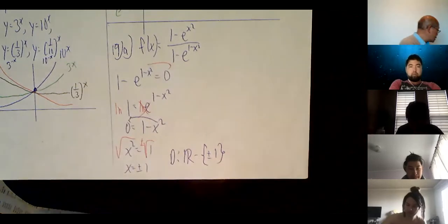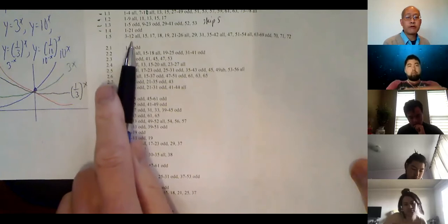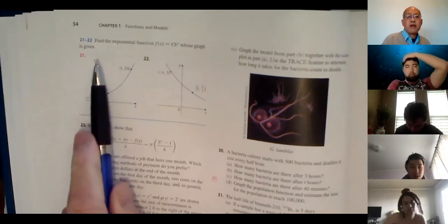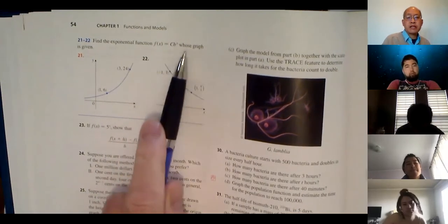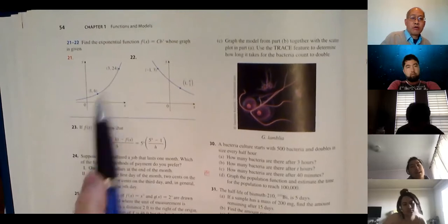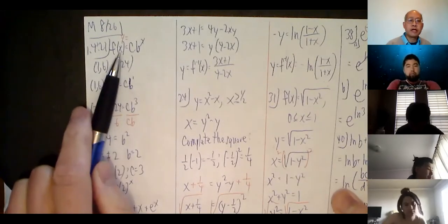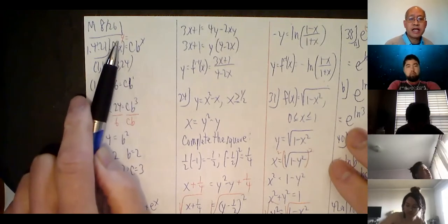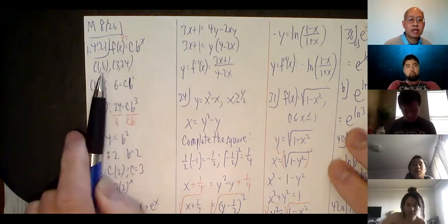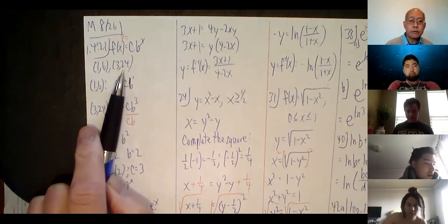The only other problem I wanted to show you was 21. So 21 looks like this: Find the exponential function f of x equals C times b to the x whose graph is given. It's exponential. The given points are (1, 6) and (3, 24). So the essentials you need are f of x equals C times b to the x. I sneak in y equals whenever it says f of x — that's the same as y. So f of x equals blah blah blah is the same as y equals blah blah blah. And you give me these two points: (1, 6) and (3, 24).